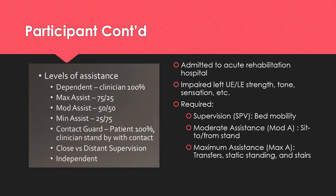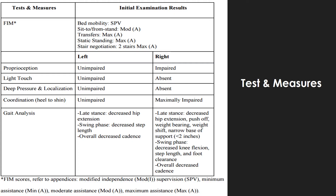The patient was admitted to an acute rehabilitation unit. Tests at this time included the Functional Independence Measure, or FIM, motor coordination testing, sensation testing, and gait analysis, which is shown in the picture to your left. A physical therapy examination was conducted one day following admission to the acute rehabilitation hospital.